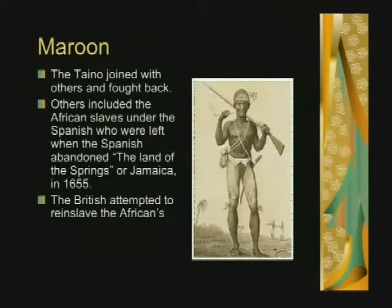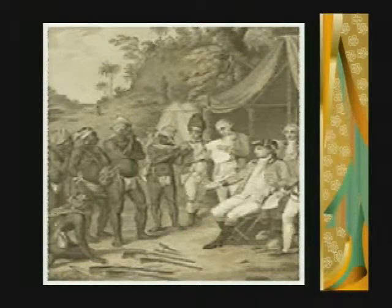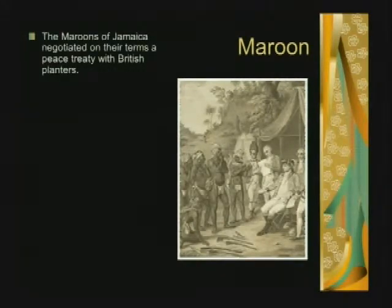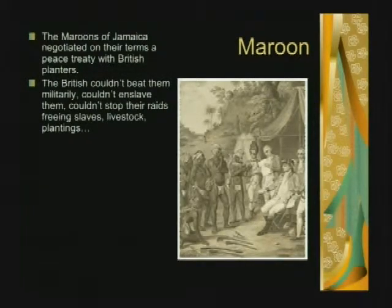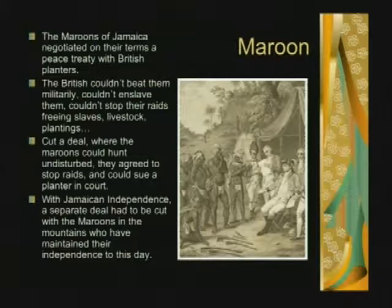The British attempted to re-enslave the Africans, led a battle, and lost. This is a painting of a group of maroons negotiating a peace treaty with the British planters after the British lost. They couldn't beat them militarily, couldn't enslave them, couldn't stop their raids freeing slaves and taking livestock. So they cut a deal where the maroons could hunt undisturbed, agreed to stop raids, and could sue a planter in court without being sued themselves. With Jamaican independence, a separate deal had to be cut with the maroons in the mountains, who have maintained their independence to this day.